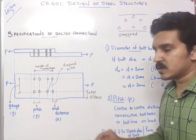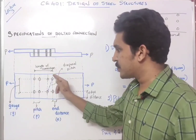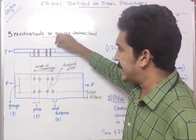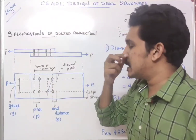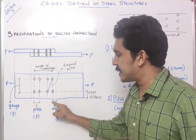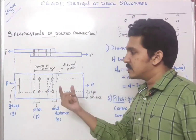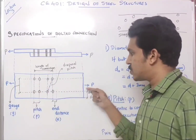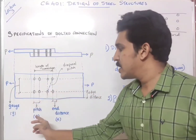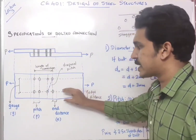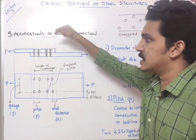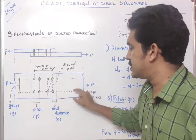The next terms are end distance and edge distance. End distance is the distance from the bolt hole to the end of the plate, measured in the same direction as the load is acting, denoted by e. Edge distance is measured perpendicular to the load action — similar to gauge direction. End distance and edge distance are best seen in the plan view: the edge distance is in the perpendicular direction and end distance is in the direction of the load.